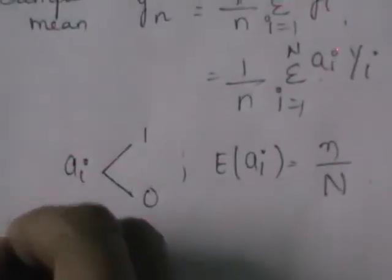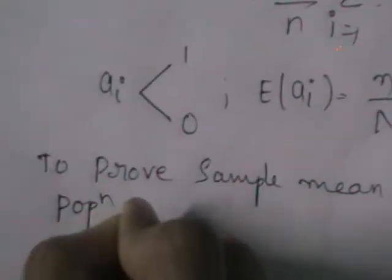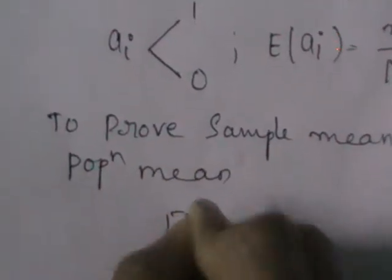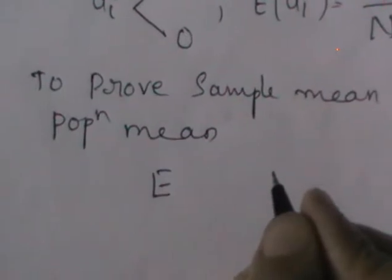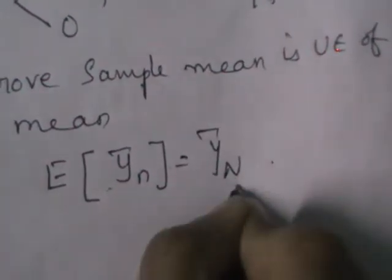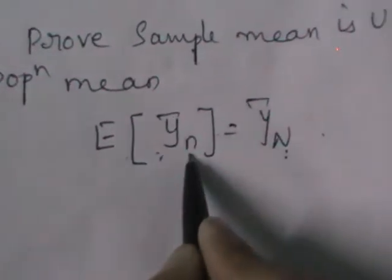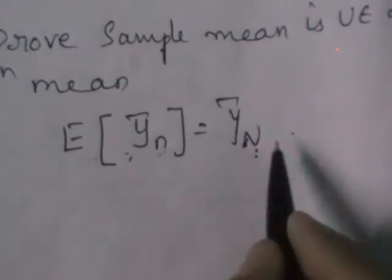Now you need to prove that sample mean is an unbiased estimator of population mean. When do you say an estimator is an unbiased estimator? If expectation of t equals theta. Similarly here, if expectation of ȳ_n equals capital Ȳ_N, we call ȳ_n an unbiased estimator of Ȳ_N — that is, sample mean is an unbiased estimator of population mean. So it is sufficient to prove that E(ȳ_n) equals Ȳ_N.